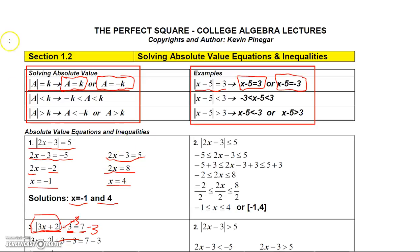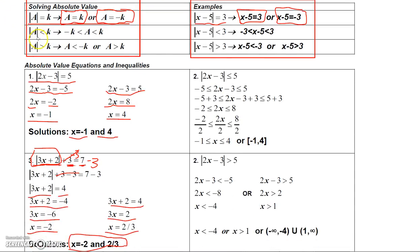Now we move on to absolute value inequalities. If you have the absolute value of an expression less than some number K, you can write this as a compound inequality: remove the absolute value and place the expression between negative K and positive K. For example, the absolute value of X minus 5 less than 3 becomes negative 3 less than X minus 5 less than 3. This works the same way if it's less than or equal to — just use less than or equal to for both inequalities.